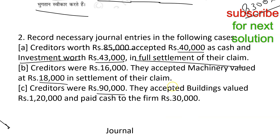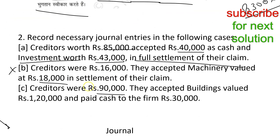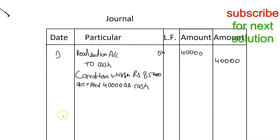For entry number two — creditors were Rs. 16,000, and Rs. 18,000 machinery is given in settlement. Since the asset and liability are already transferred to the realization account, we do not need to pass any separate entry for this transaction. Moving to entry number three (Part C): Cash Account debit, To Realization Account.